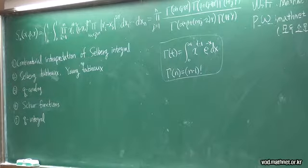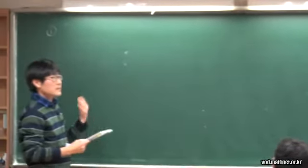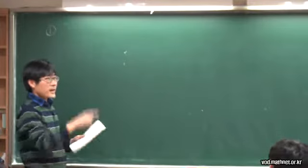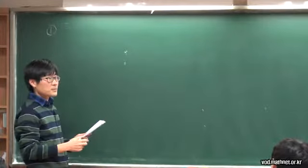Let me outline the sections of my talk. The first is the combinatorial interpretation due to Richard Stanley, who showed that the Selberg integral can be interpreted as a probability of a certain permutation — specifically, when you choose a random permutation, the probability that it has certain properties.